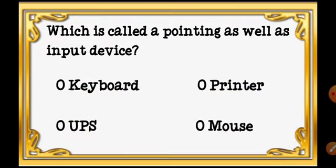Question number 4: Which is called a pointing as well as input device? Options are: A) Keyboard, B) Printer, C) UPS, D) Mouse.